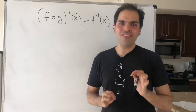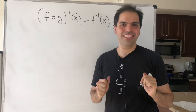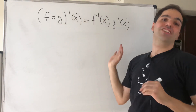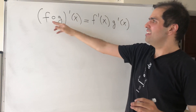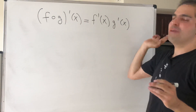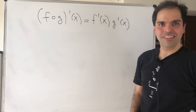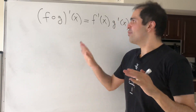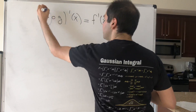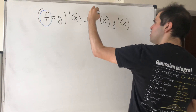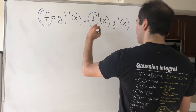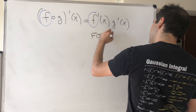Thanks for watching. Today I would like to solve a very interesting chain rule question. When does the fake chain rule hold? In other words, when is it true that (f composed with g)' of x equals f prime of x times g prime of x? What I'm asking is: for which functions f does it hold that (f∘g)' equals f prime times g prime, for all g?